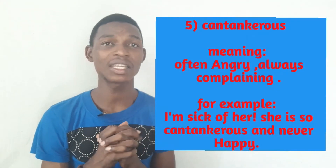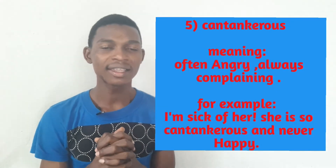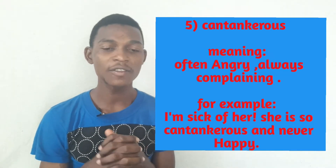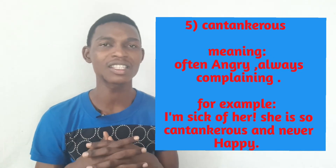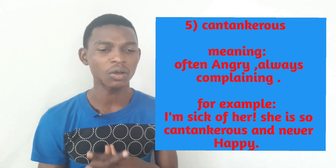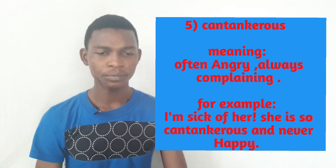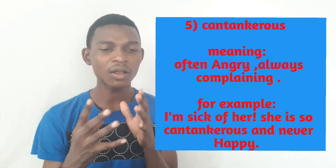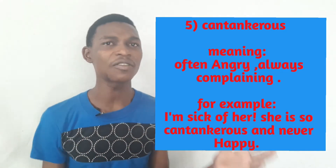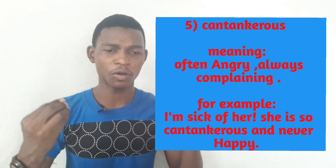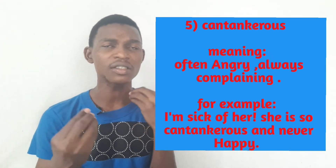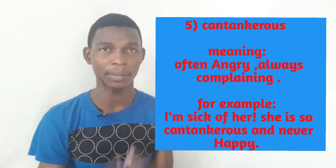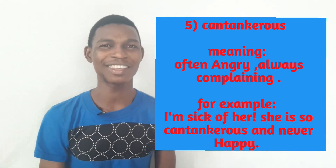Number five is cantankerous. Cantankerous means often angry or always complaining. If someone is cantankerous, it means this person is often angry or always complaining. For example, I'm sick of her — she's so cantankerous and never happy. It means she's often angry and always complaining. Stop being so cantankerous, okay?